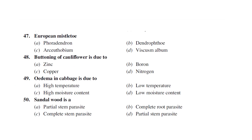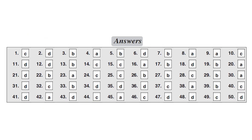European mistletoe is Viscum album. Buttoning of cauliflower is mainly due to nitrogen deficiency. Edema in cabbage is due to high moisture content. Sandalwood is generally a partial stem parasite. These are all the answers for the questions in this model paper.